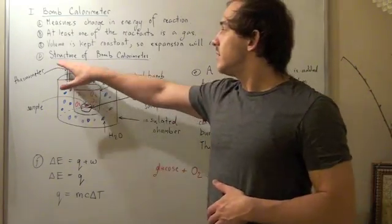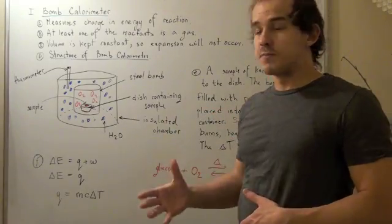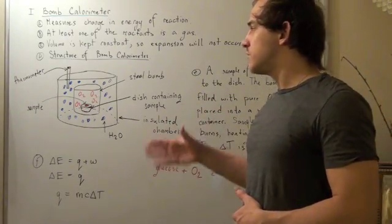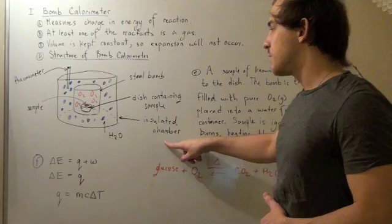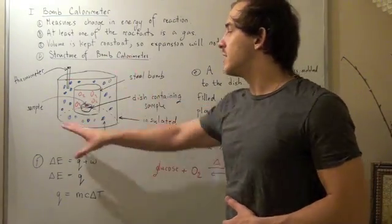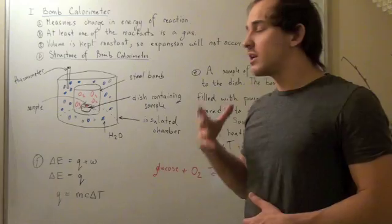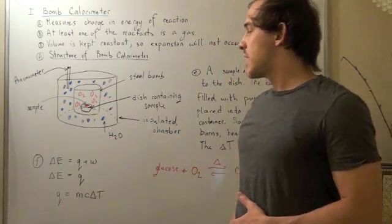So let's look at the structure of a bomb calorimeter. Bomb calorimeters are composed of two cylinders, a large one and a small one. The outer one is called the insulated chamber and it insulates the entire system. So energy is not allowed to leave our bomb calorimeter.